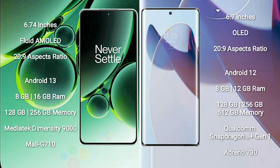OnePlus Nord 3 runs on the Android 13 operating system. Motorola Moto X30 Pro runs on the Android 12 operating system.